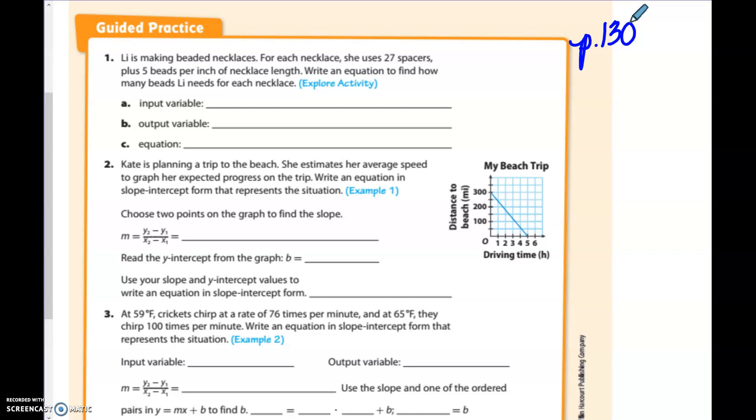Lee is making beaded necklaces. For each necklace, she used 27 spacers. So all the time, no matter what, she is using 27 spacers plus 5 beads per inch. Now write an equation to say how many beads Lee needs for each necklace. So the 27 spacers is going to be an initial value because this is, no matter what, we're going to use that. So what is the input? Well, we first need to know how many inches, so the number of inches she's going to make this necklace.